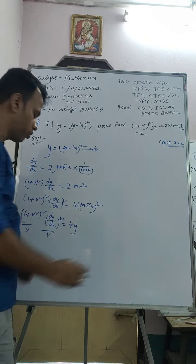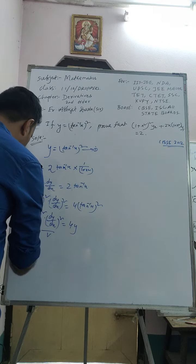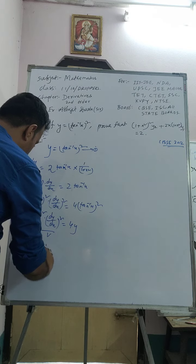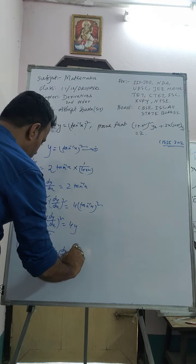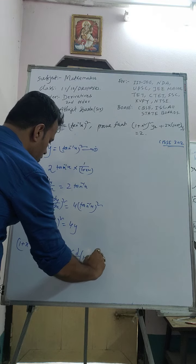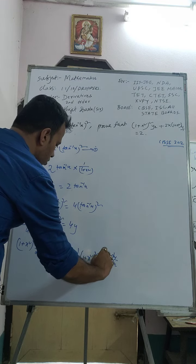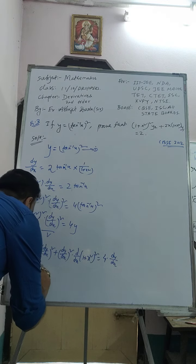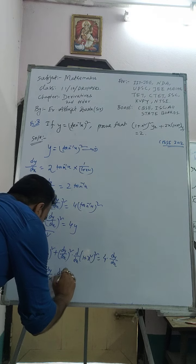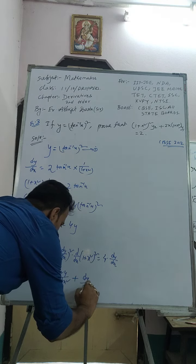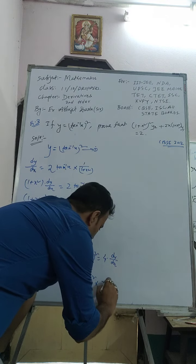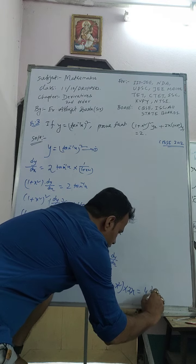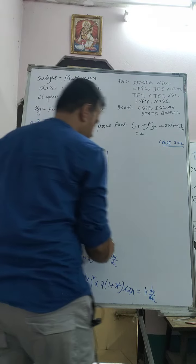Call this equation U = B where U = (1 + x²)² and B = (dy/dx)². Now differentiate both sides using the product rule: (1 + x²)²·2·(dy/dx)·(d²y/dx²) + (dy/dx)²·d/dx(1 + x²)² = 4·dy/dx. The derivative of (1 + x²)² is 2·(1 + x²)·2x.